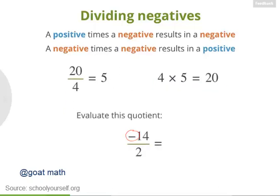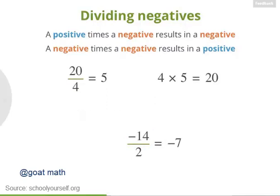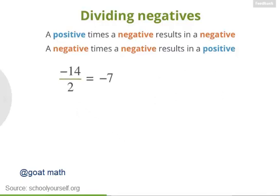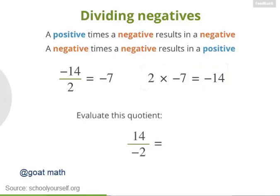Let's try dividing a negative number. What's negative 14 divided by 2? In other words, what number can you multiply by 2 to get negative 14? Negative 14 divided by 2 is negative 7. You know this is correct because it's the same thing as saying that 2 times negative 7 equals negative 14.